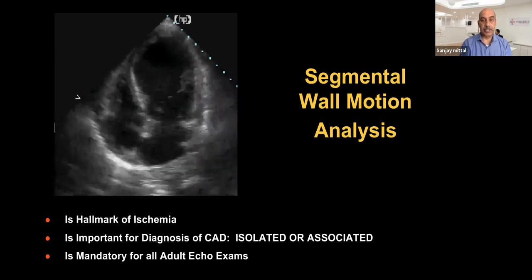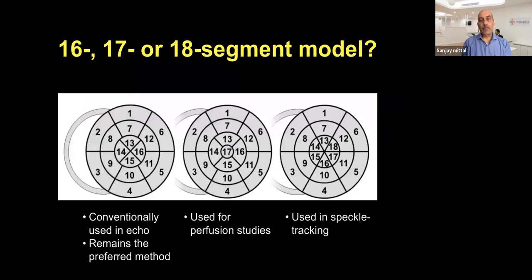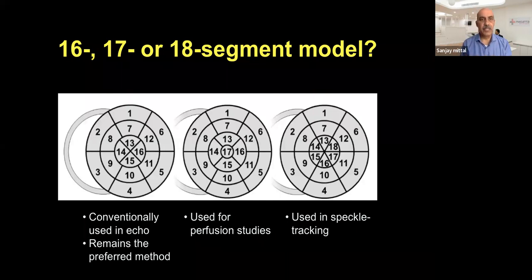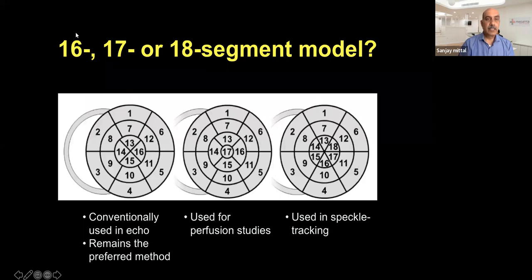To understand how a wall motion abnormality is ischemic versus fibrotic from patchy myocarditis or sarcoidosis, the whole left ventricle has been divided into certain segments. There have been three different models: the first, commonly used in clinical practice, is the 16-segment scoring system; another is 17 segments. In the 16-segment model, the base has 6 segments, the mid segment has 6 segments, and the apex is divided into 4 segments.